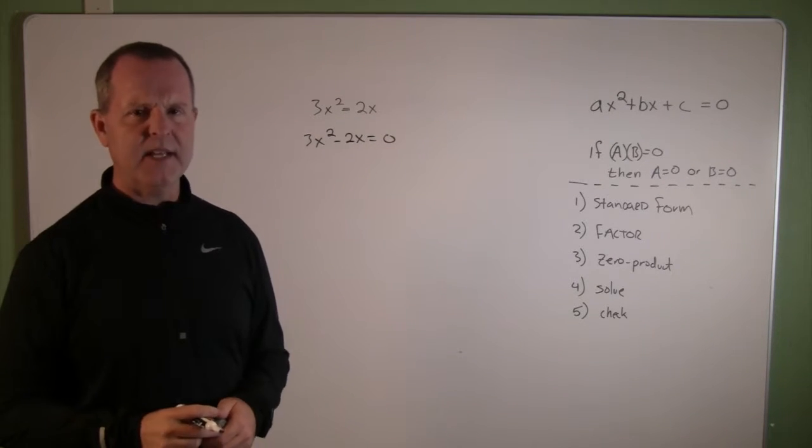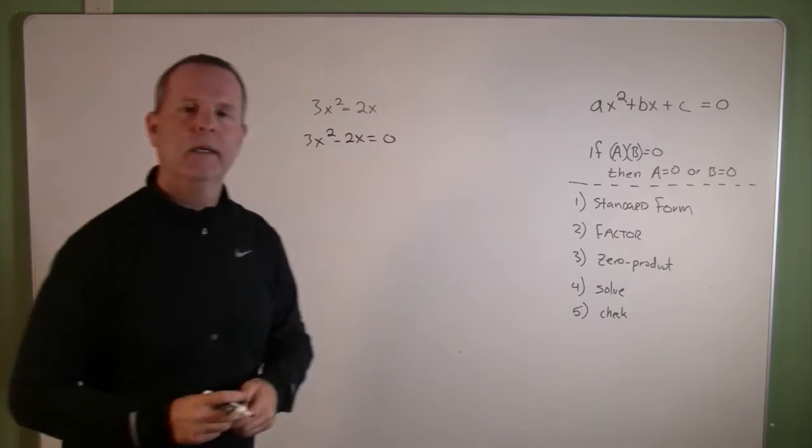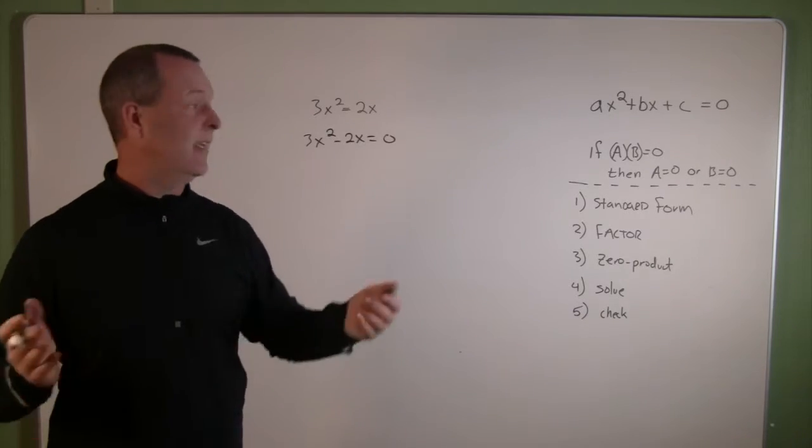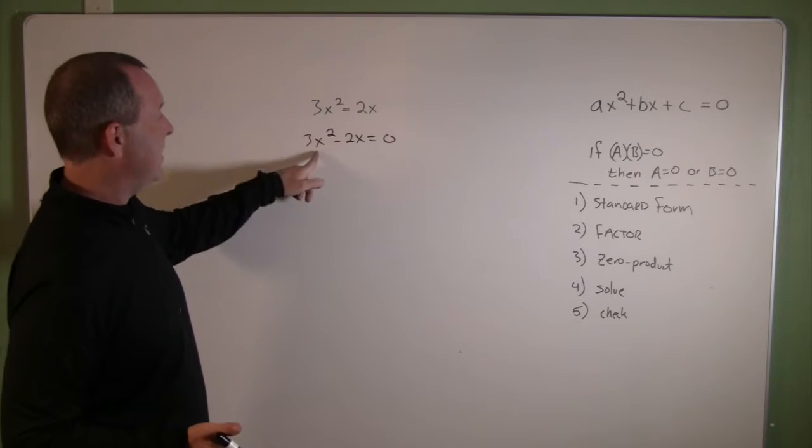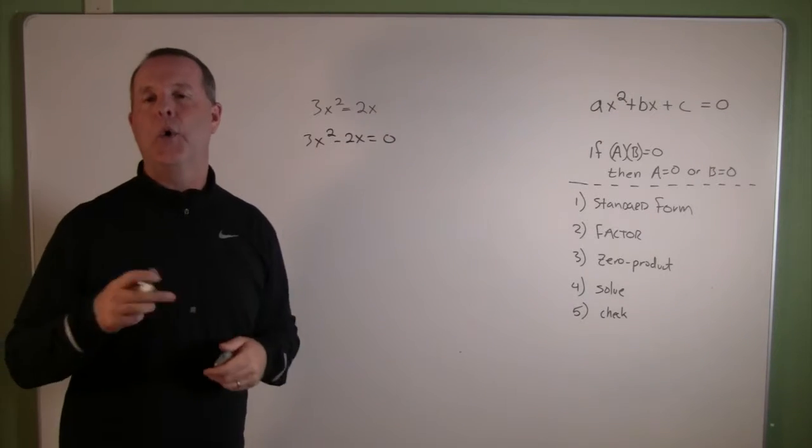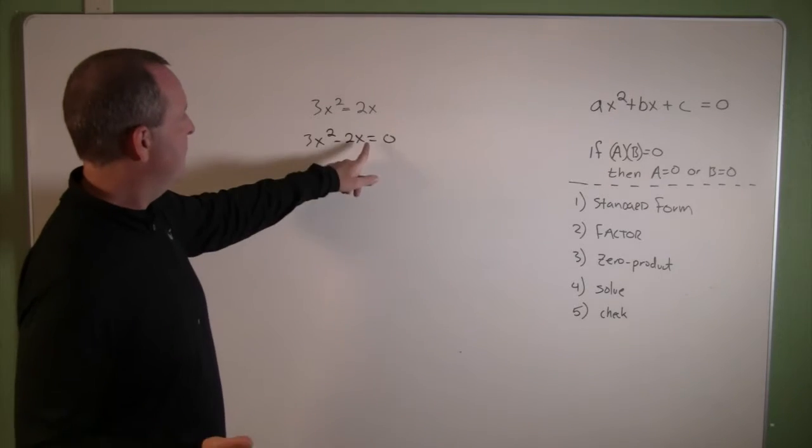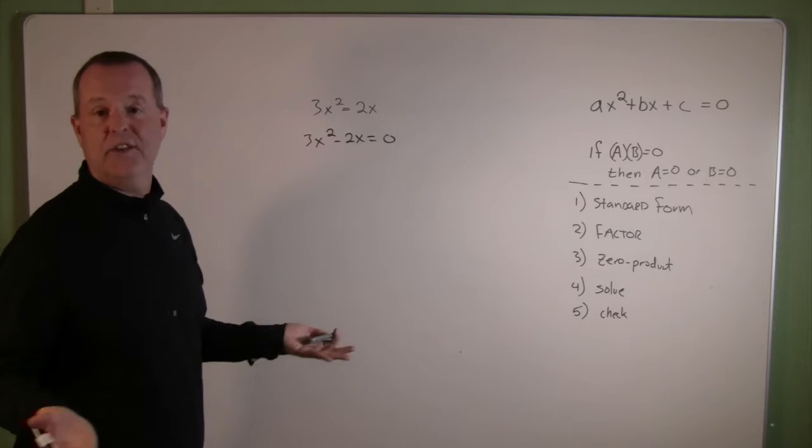Now some of you are going, wait a minute, where's the other term? Isn't standard form supposed to have three terms in there? Well, a definition of quadratic doesn't necessarily mean that you have to have each of these three terms. What it means is that its highest term has to be a square or a second degree polynomial. So this is a quadratic, but this last constant, it's just zero, so it's just missing.